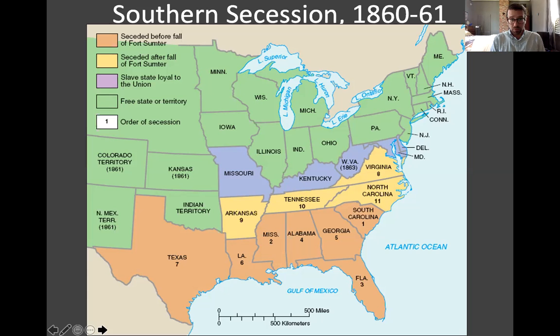The lame-duck president James Buchanan was absolutely not ready for war. He was still president for the first few months of all these secessions. He said secession was illegal, but that he was basically powerless to do anything about it unless the Southern states became violent — it was not an armed rebellion, just words and conventions. He didn't want to make things worse by taking drastic measures. He was on his way out, thinking Lincoln would deal with it.